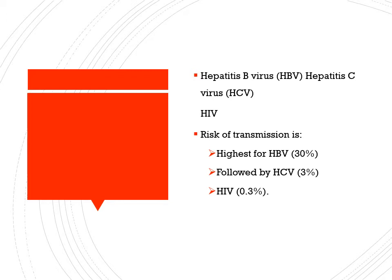There are three types of viruses at risk of transmission in such cases: Hepatitis B, Hepatitis C, and HIV. The risk of transmission is maximum for Hepatitis B, which is 30%, followed by Hepatitis C at 3%, and HIV at 0.3%.